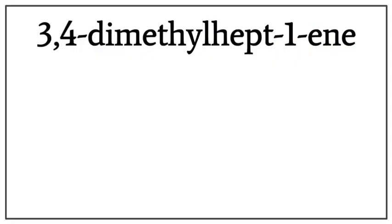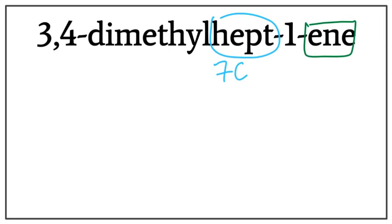Let's draw the structure for 3,4-dimethyl-hept-1-ene, or 3,4-dimethyl-heptene. Hept tells us that there are seven carbons present in the longest carbon chain. Ene tells us that this is an alkene, meaning that there is a double bond present between the carbons.